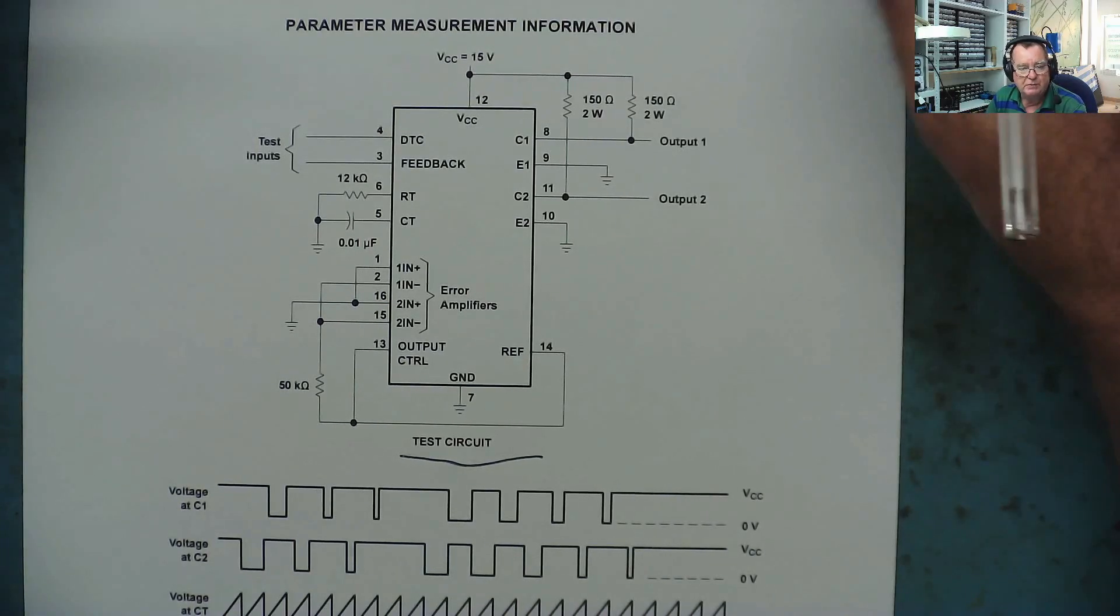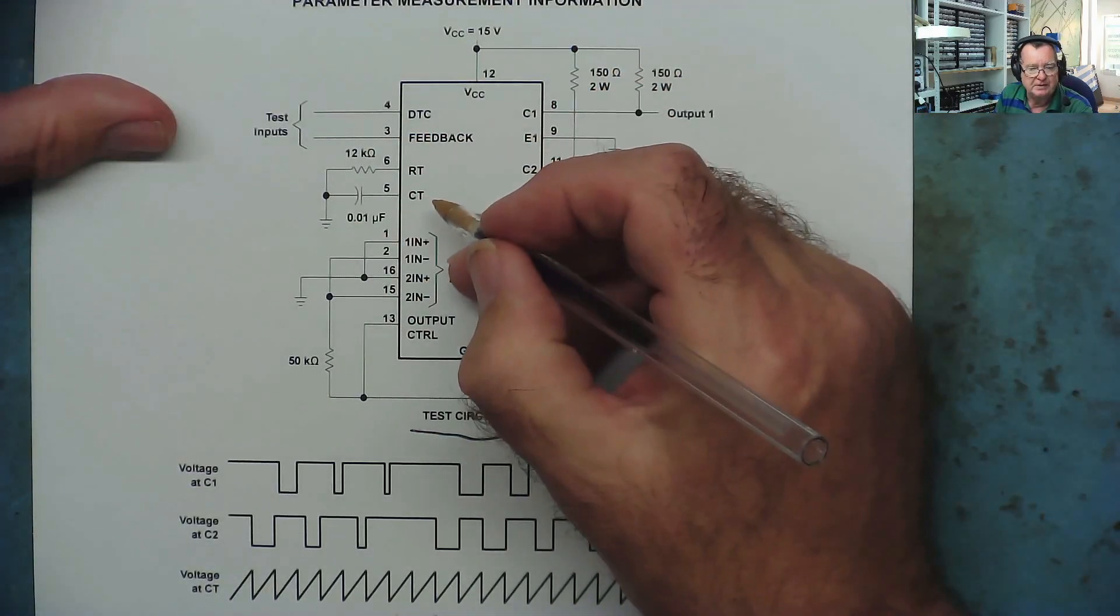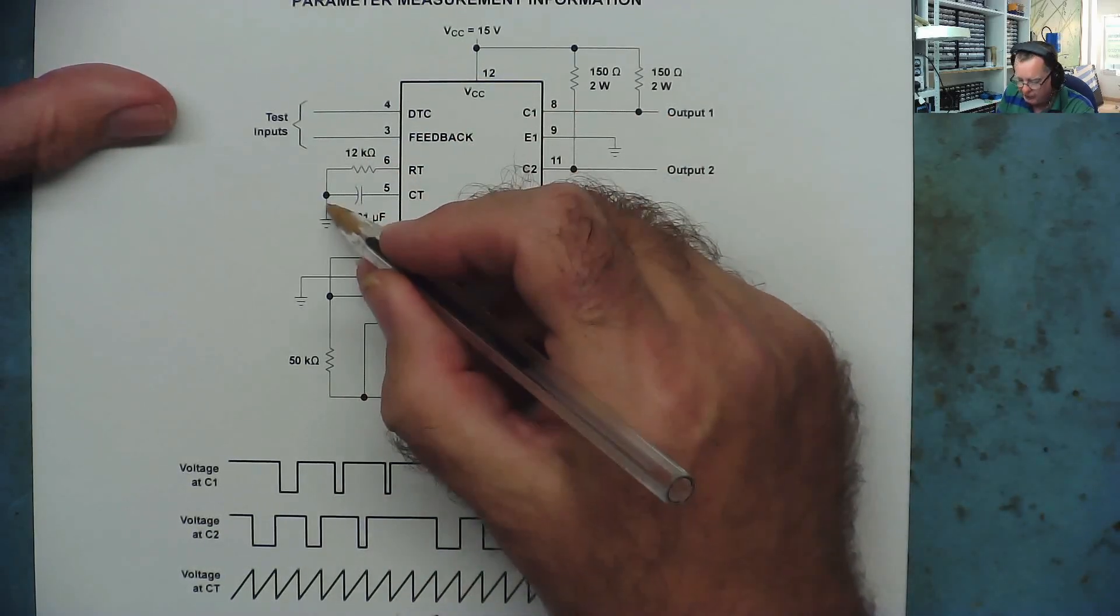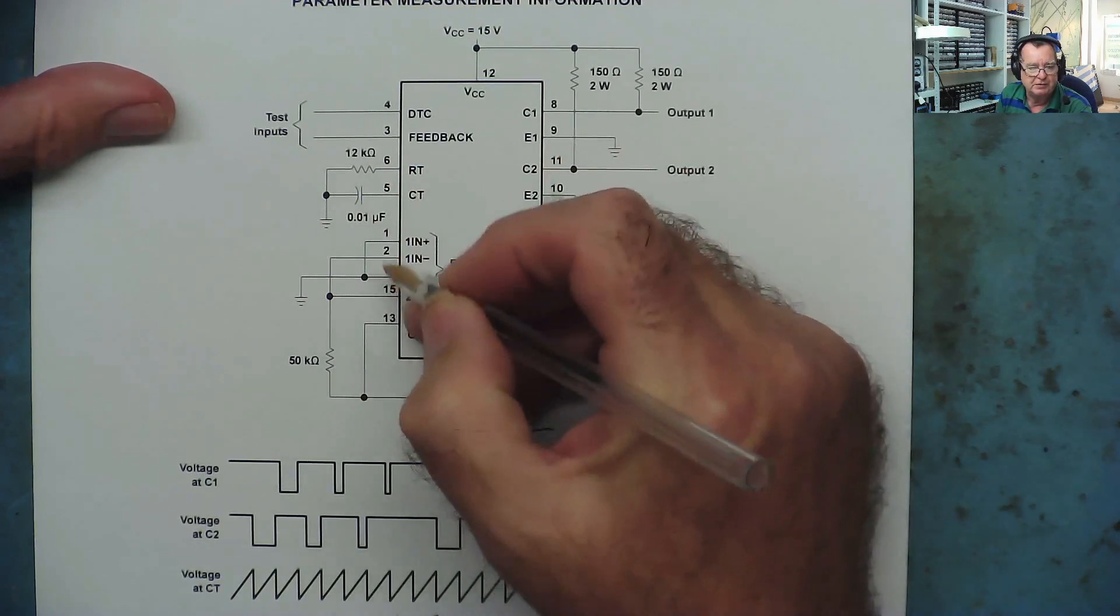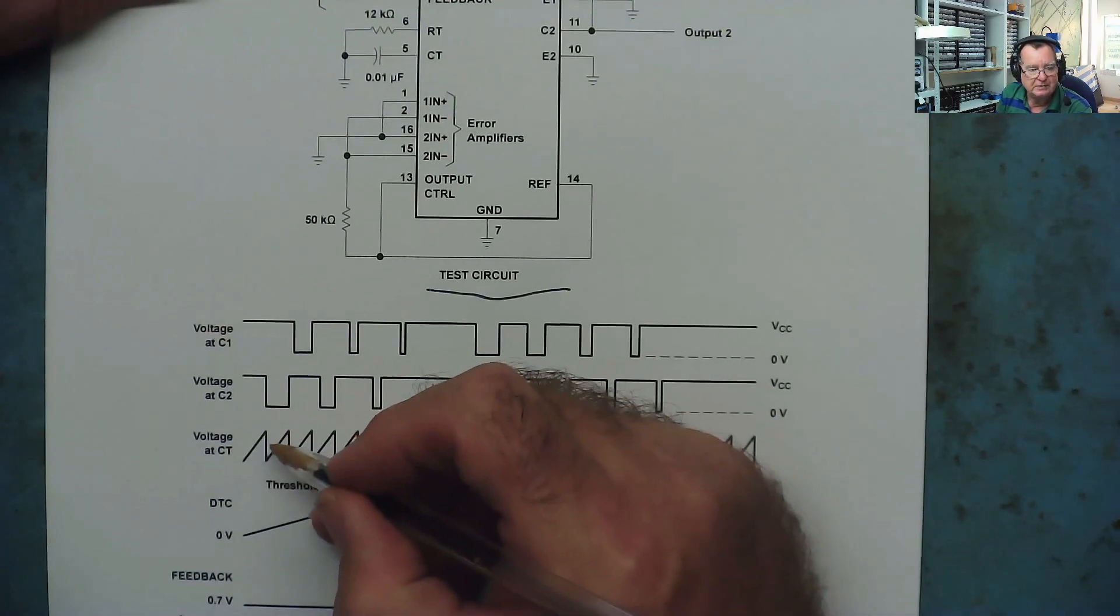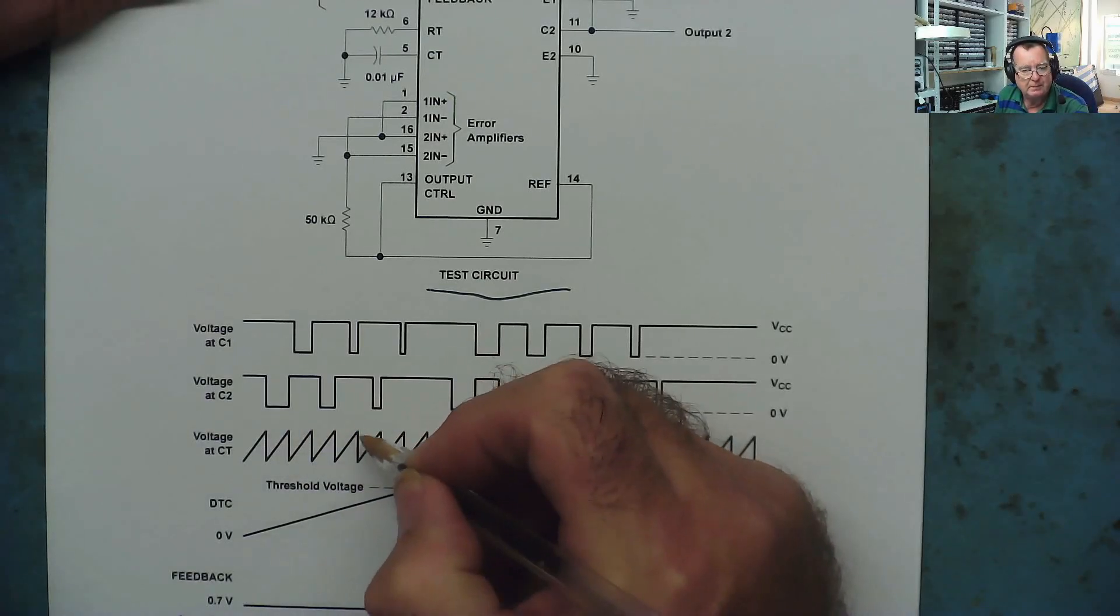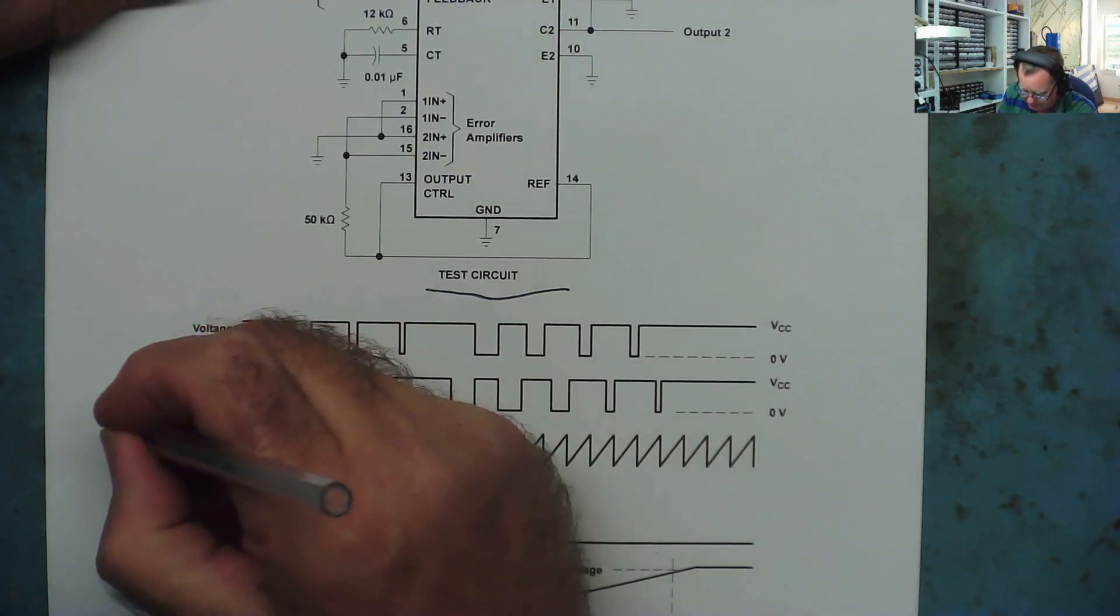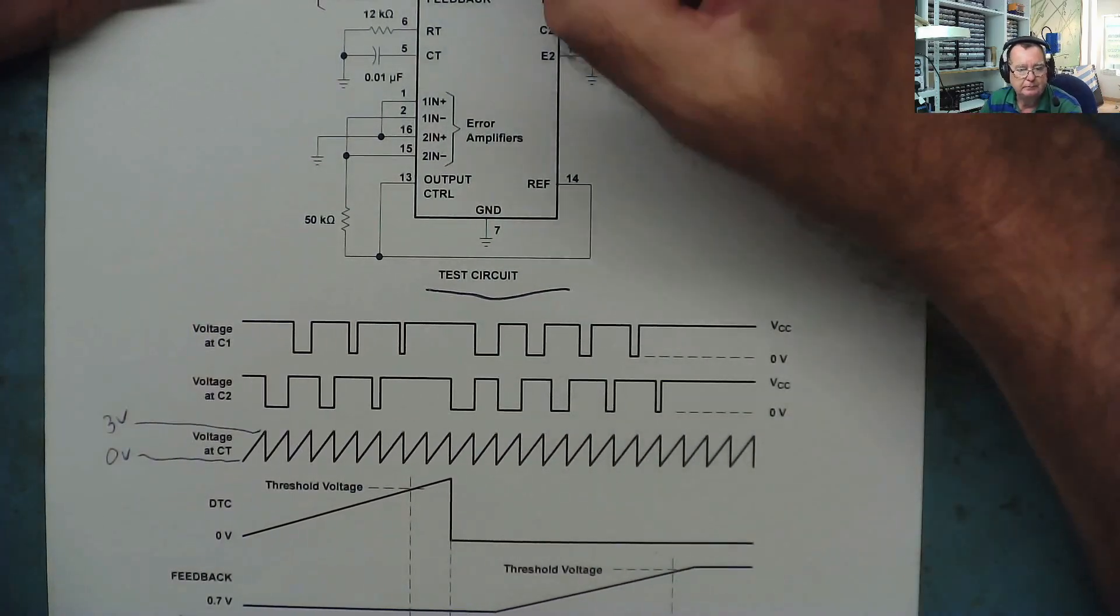Now the way this works: this is an oscillator. You see this RT and CT. These two components form an oscillator and basically the resistor charges the capacitor to a certain voltage, at which point the chip discharges it. And it charges again, the chip discharges it, and it forms a waveform like this. It says here voltage at CT. You can see it going up and down. And I measured that on my oscilloscope and found this is about 3 volts and this is 0 volts.